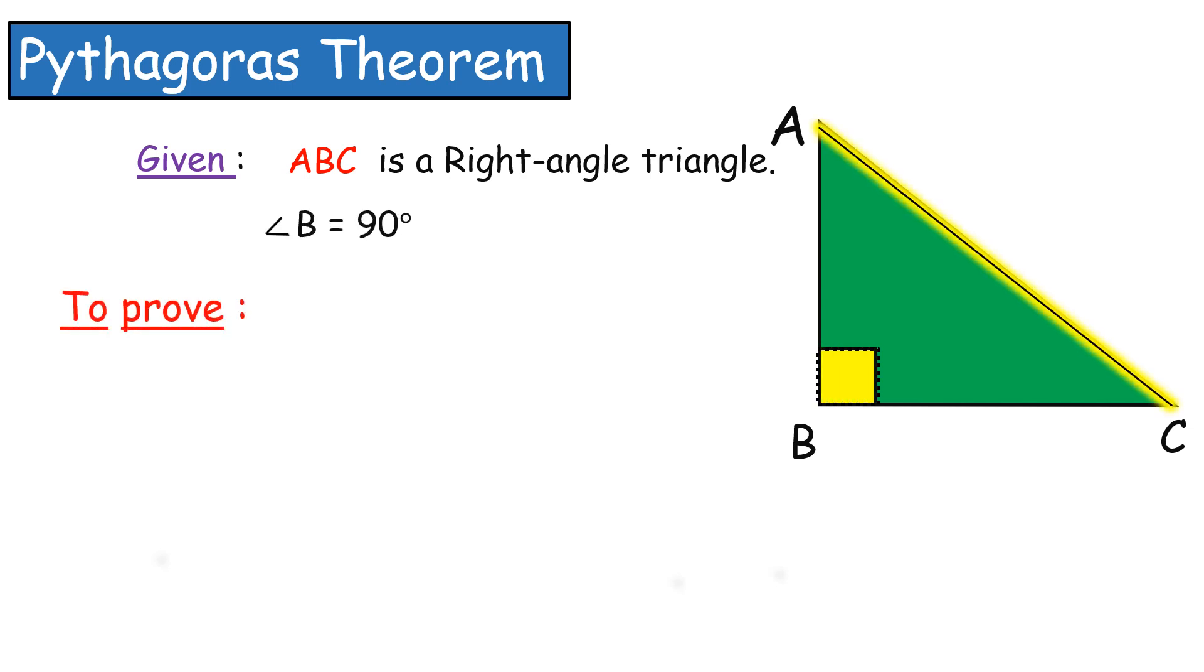To prove that the square of the hypotenuse, that is, AC² is equal to the sum of the squares of the other two sides, that is AB² plus BC².